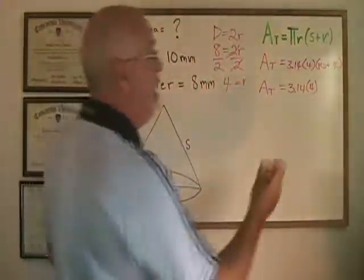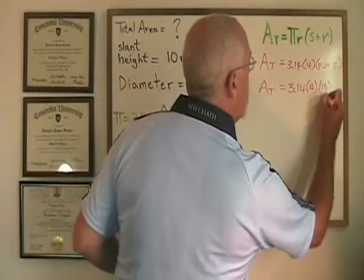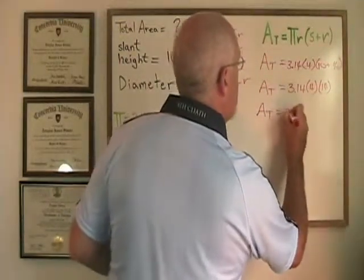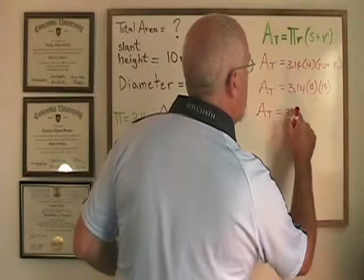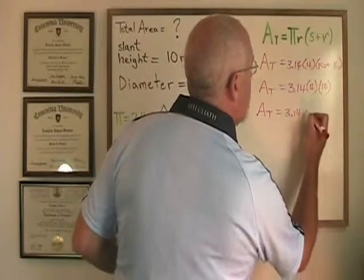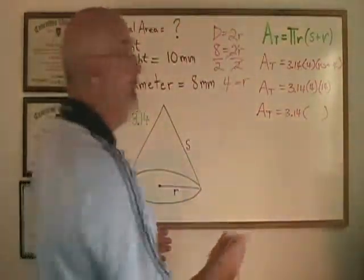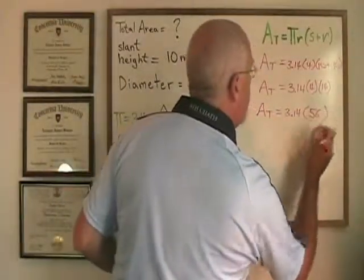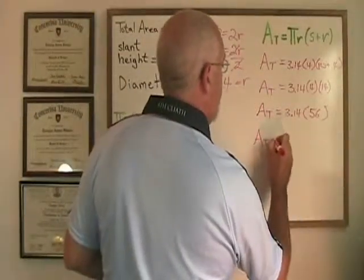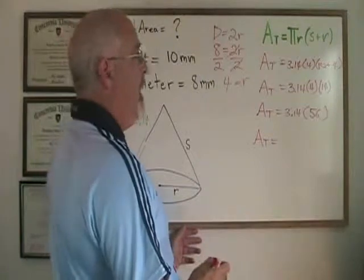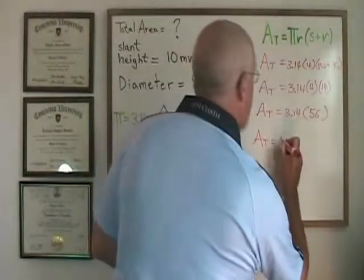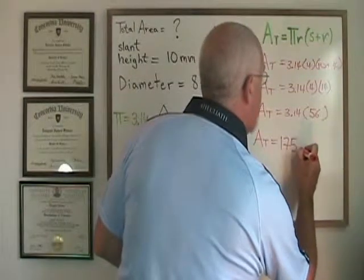10 plus 4 is 14. 4 times 14 is 56. And pi times 56 is equal to 175.84.